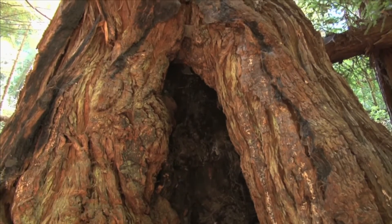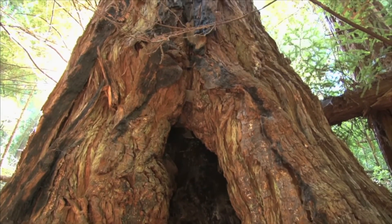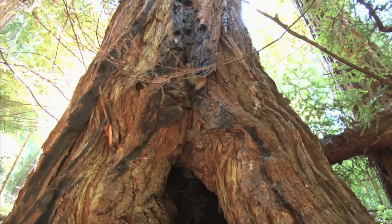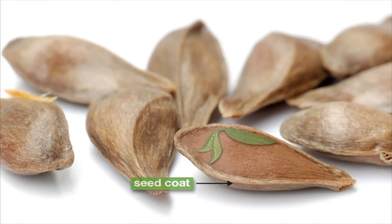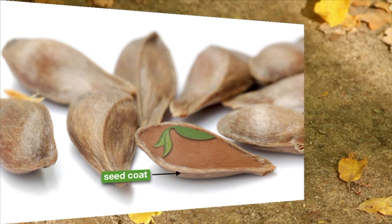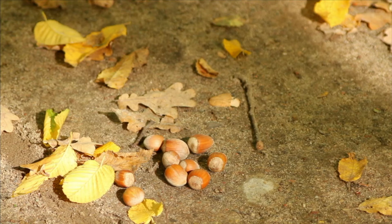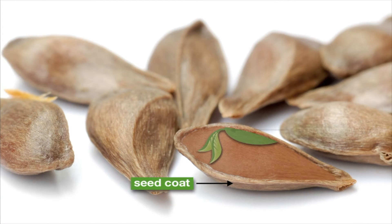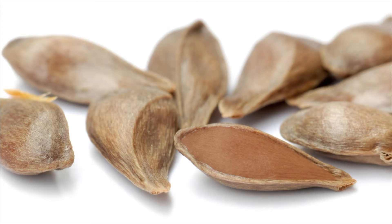Seeds come in all shapes, colors, and sizes. The size of a seed really has nothing to do with how big the plant will grow to. For example, giant redwoods — the tallest plants on earth — come from a tiny seed only one-sixteenth of an inch long. No matter the size or shape of a seed, every seed has three parts. The first part is called the seed coat, which protects the other parts of the seed from injury, insects, and loss of water. The seed coat gives the parts inside the seed a chance to survive until the conditions are just right to start a new plant. Inside the seed coat is the second part called the embryo. The embryo contains all the parts that are needed to become a new plant. The third part of a seed is its stored food, which is used by the embryo when it begins to grow.